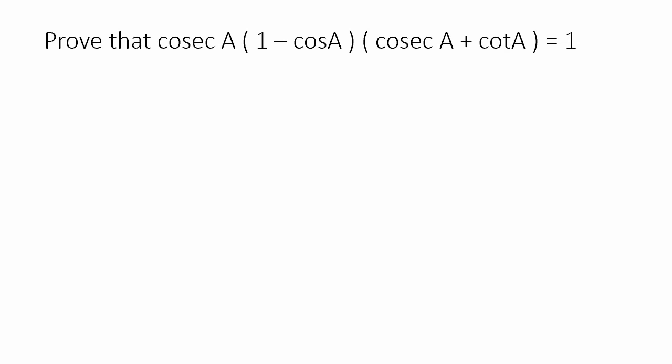To prove this, it is very important that we remember certain definitions. First, recall the cosecant A definition: cosecant A equals 1 divided by sin A. This is very important to remember — if you don't remember this, you will not be able to solve this. Second definition: cot A equals cos A divided by sin A.